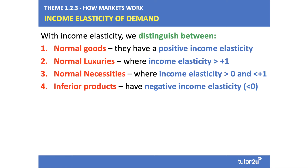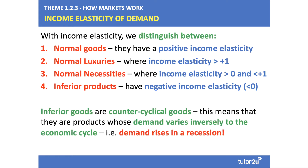Normal necessities, on the other hand, have a positive income elasticity of demand. In other words, you spend more on the product as income goes up, but not substantially more. Therefore, it tends to have a low positive income elasticity of between 0 and 1. There is also a category called inferior products. These goods and services have a negative income elasticity — 0 or less — meaning that as income goes up, demand goes down.